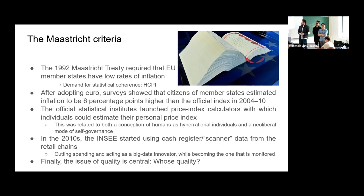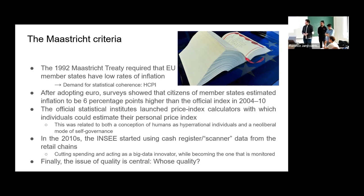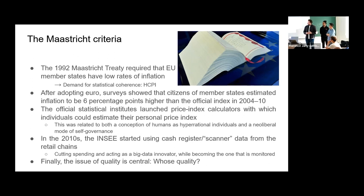Using big data through scanner data turned the tables on INSEE, because it was now being measured by private interests. Quality is a key issue in social conflicts over how to estimate inflation — it is a subjective thing with many ways to estimate it. The general argument of the paper is that over time, estimates of inflation tend to measure inflation as lower than before.